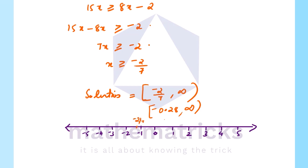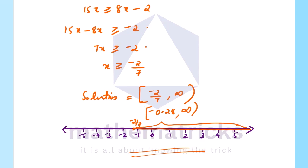The answer is x greater than or equal to minus 2 by 7. The solution is the closed interval from minus 2 by 7 to infinity. We get the answer from the graph on the number line. We will continue with more questions in the next session. Thank you.